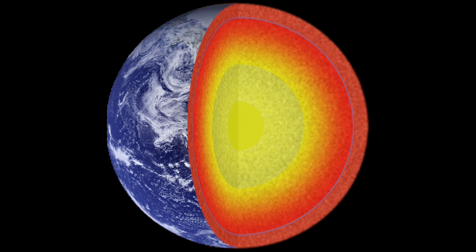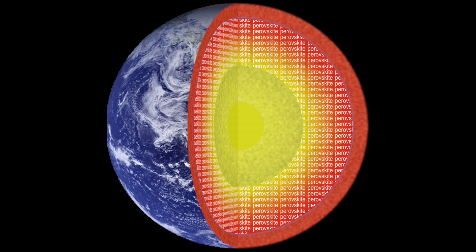The prevailing theory has been that the majority of the lower mantle is made up of a single ferromagnesian silicate mineral commonly called perovskite, defined through its chemistry and structure. It was thought that perovskite didn't change structure over the enormous range of pressures and temperatures spanning the lower mantle.